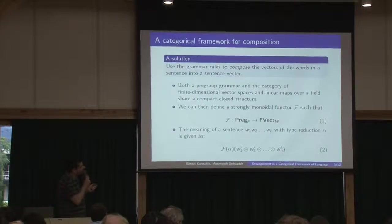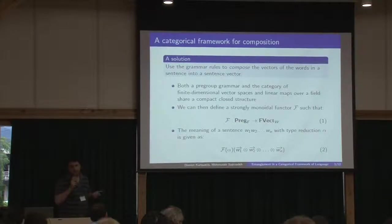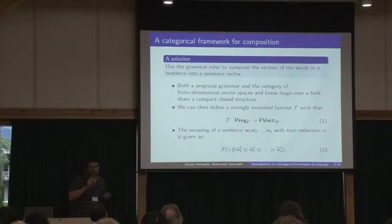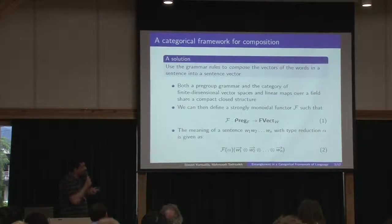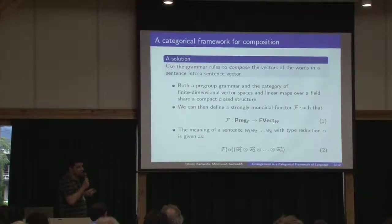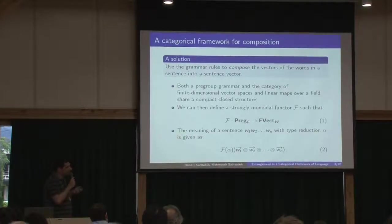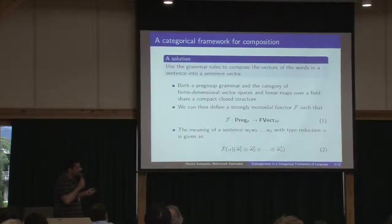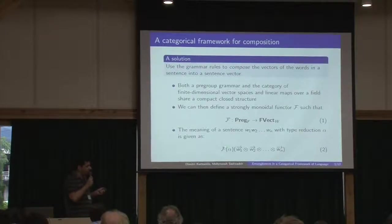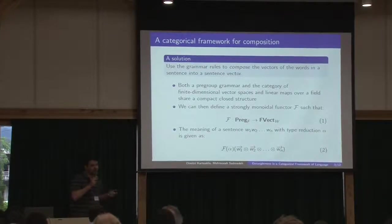If you express your grammar as a pregroup, then this is a compact closed category. And since the category of finite dimensional vector spaces and linear maps is also compact closed, then basically you can have a functorial passage from any type reduction to some manipulation between vector spaces. So basically we define the meaning of a sentence or a phrase like this. We have alpha to be our type reduction, we have our functor, and we apply this thing here to the tensor product for the word vectors for all words within our sentence.